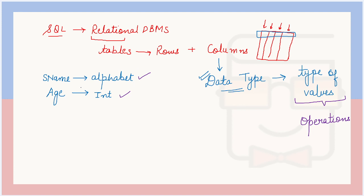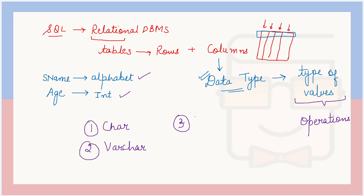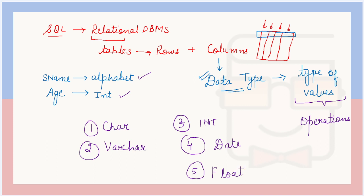Data types in SQL are mainly of four types: the first is CHAR, the second is VARCHAR, the third is INT, and the fourth is DATE. There is also another data type that is a variation of the numeric type — the FLOAT data type, which also stores numeric values.